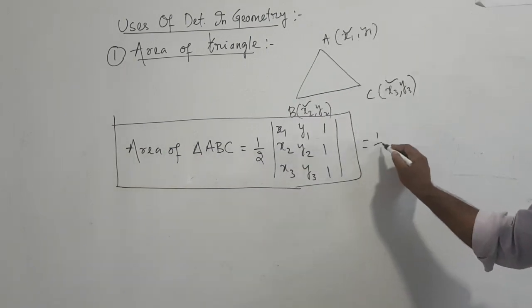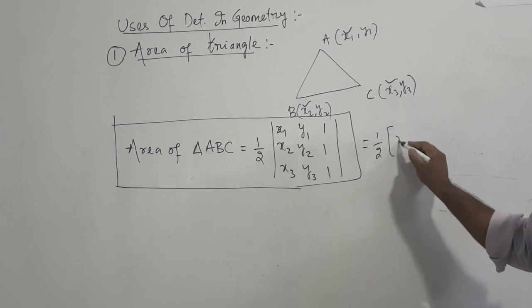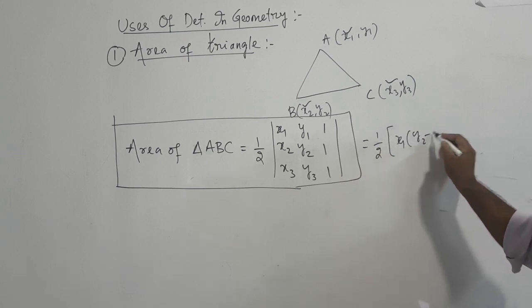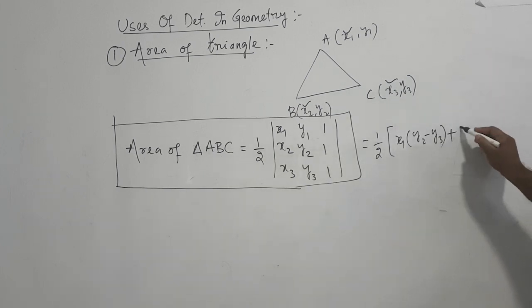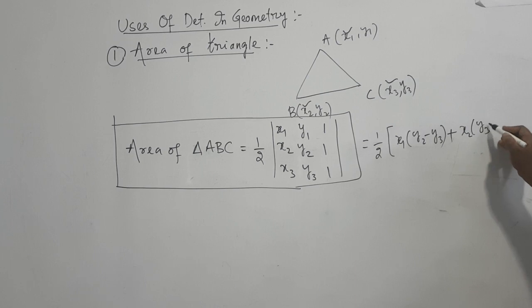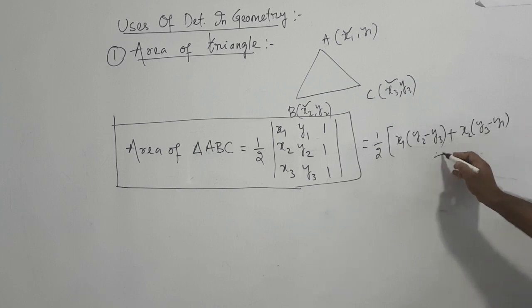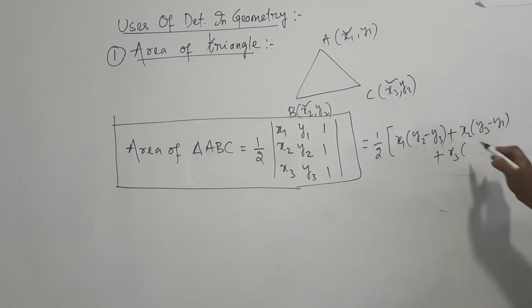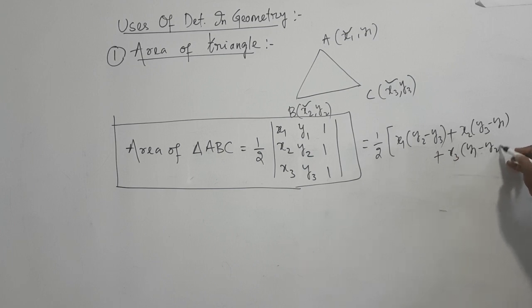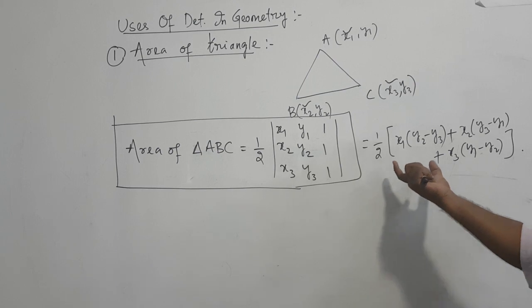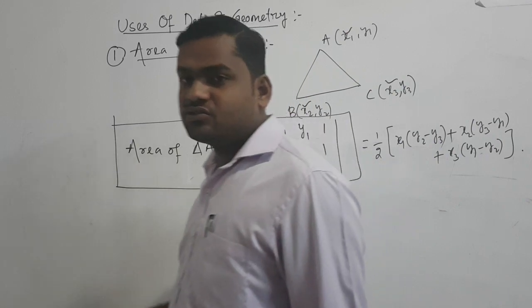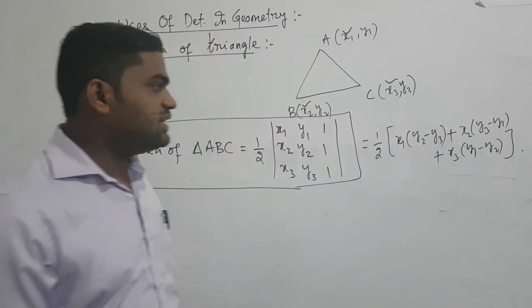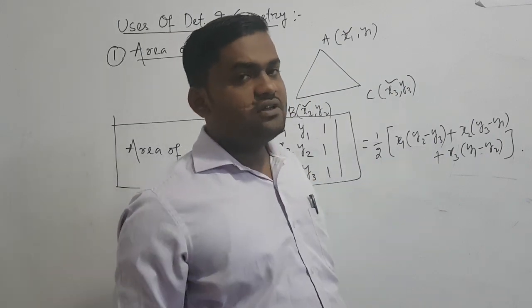Expanding this gives: half of x1 times (y2 minus y3) plus x2 times (y3 minus y1) plus x3 times (y1 minus y2).